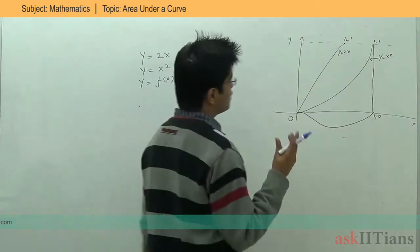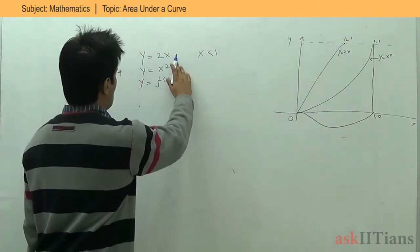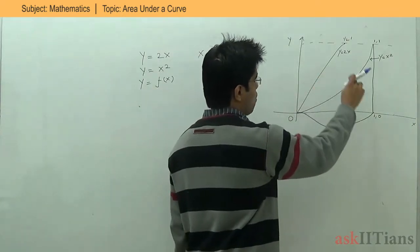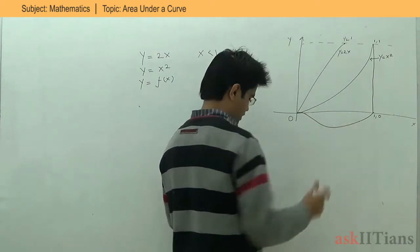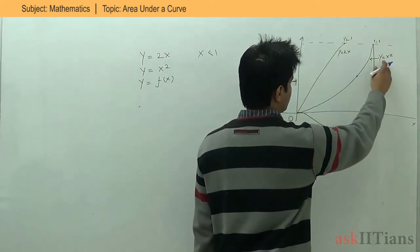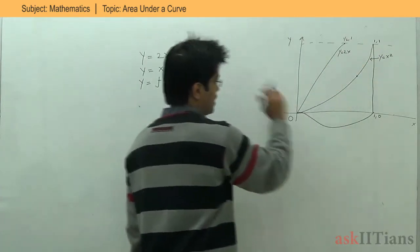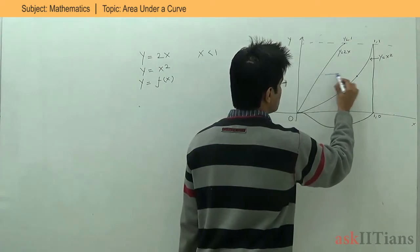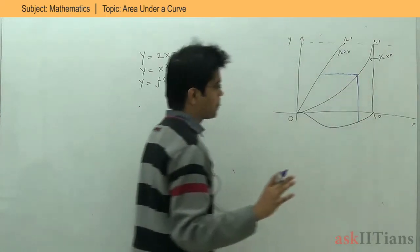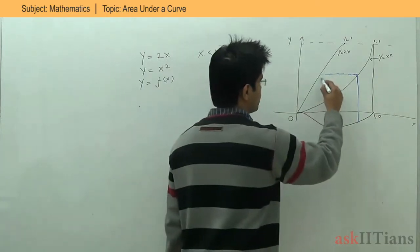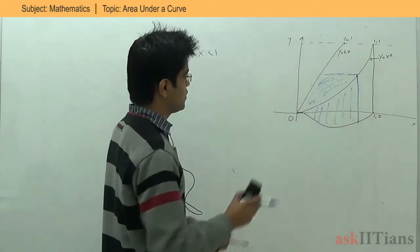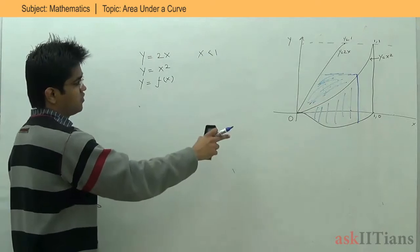So what do we have here? We have three functions. One is Y equals to 2X, one is Y equals to X square, and another is Y equals to F(X). The question says that for any point on the curve Y equals to X square, for X less than 1, the area between the two curves Y equals to 2X and Y equals to X square, and the area between Y equals to X square and Y equals to F(T) is equal. We have to find out what that third function Y equals to F(X) is.